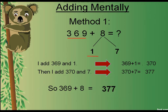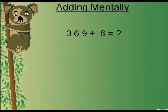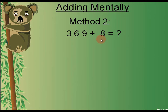Now let's move towards method two. We will take the same example: 369 plus 8. But in this method, we are going to break the first number into two parts, and here we need to make 10 with the help of the second number.